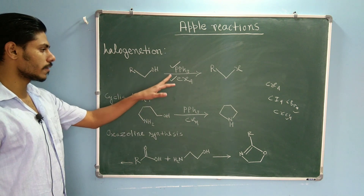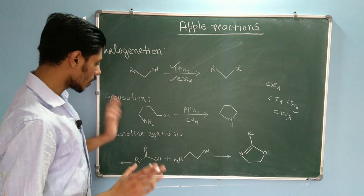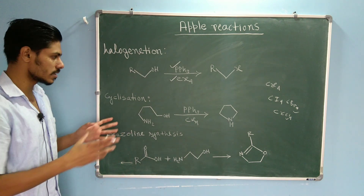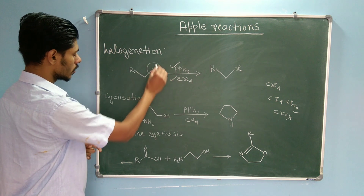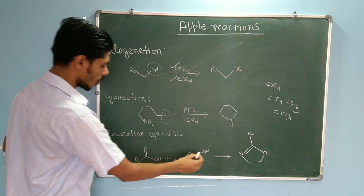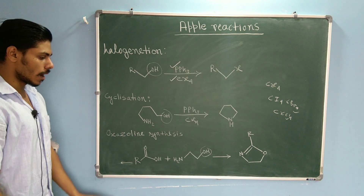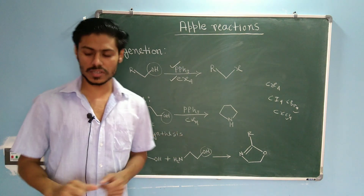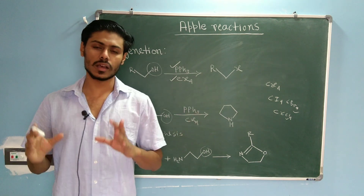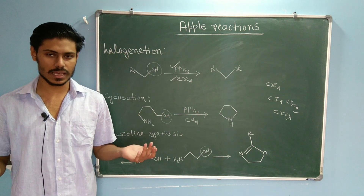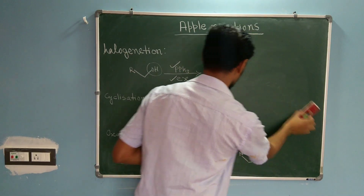The common reagent is Triphenylphosphine and Carbon Tetrahalide. Another common feature shared by all three reactions is the OH group — in all of the substrates there is an OH group. Now let us discuss the mechanism of these reactions one by one, but the first step of all three reactions is the same, so I will discuss it together.